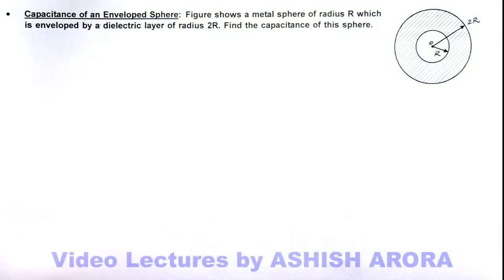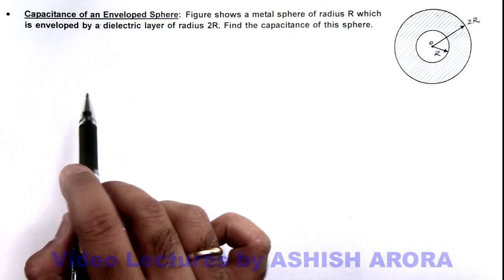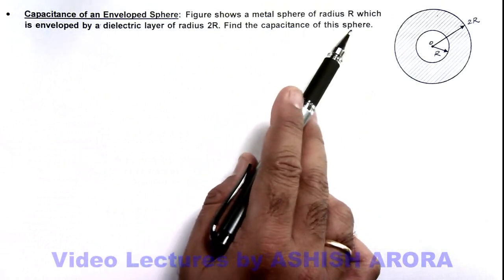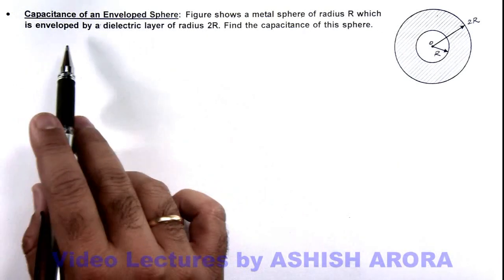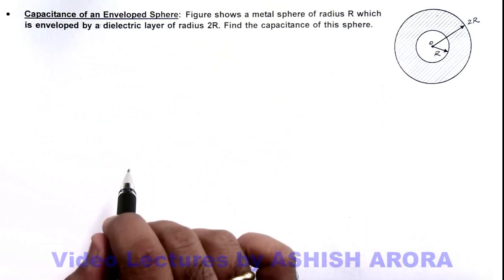In this illustration, we'll study the capacitance of an enveloped sphere. Here you can see the figure shows a metal sphere of radius R which is enveloped by a dielectric layer of radius 2R. We are required to find the capacitance of this sphere.